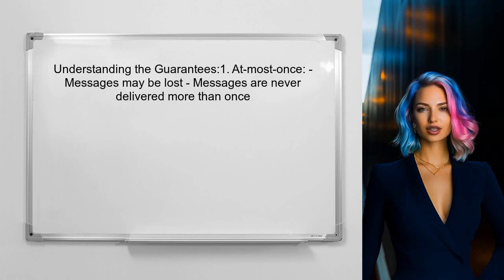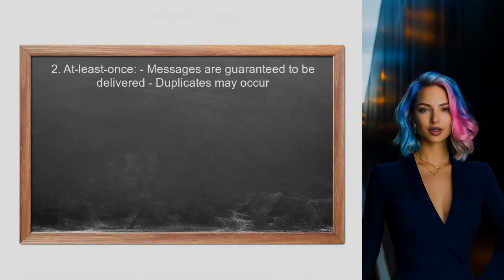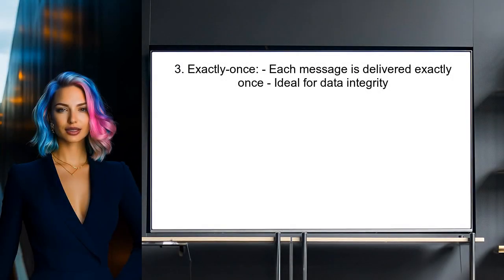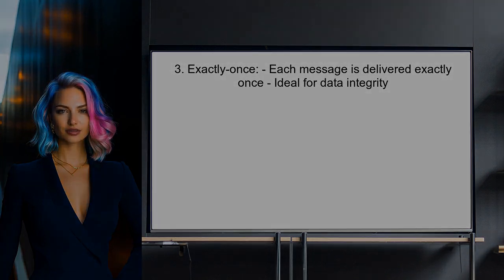First, at most once means a message may be lost but will never be delivered more than once. Next, at least once guarantees that messages are guaranteed to be delivered, but they may be delivered multiple times, leading to potential duplicates. Finally, exactly once guarantees that each message is delivered exactly one time, which is ideal for maintaining data integrity.